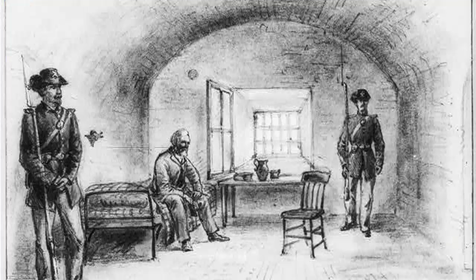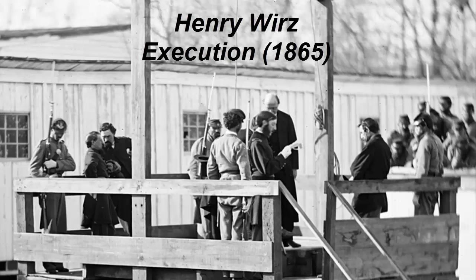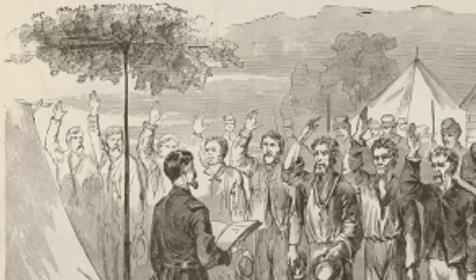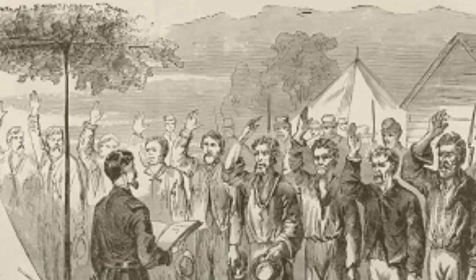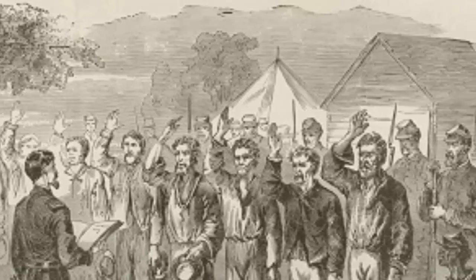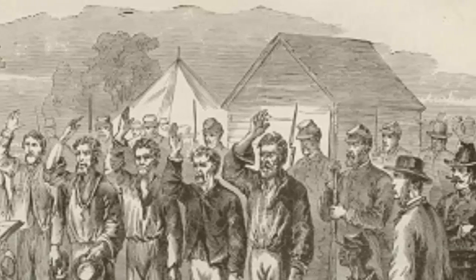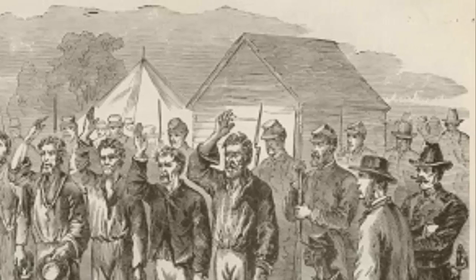Not everyone received amnesty. High-ranking officials of the Confederate government did not receive amnesty under Lincoln's plan. Other people not given amnesty included those who mistreated prisoners of war. Also, Southern states could be readmitted back into the Union if 10 percent of the voters from the 1860 election took a simple loyalty oath. That's all that was needed for the state to come back to the Union.